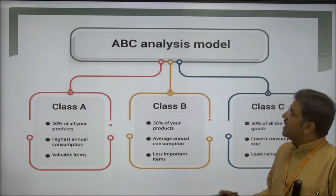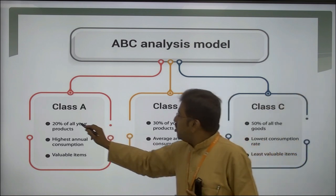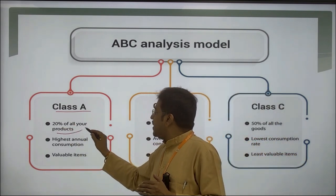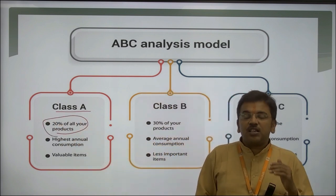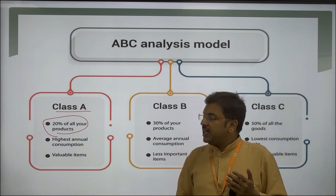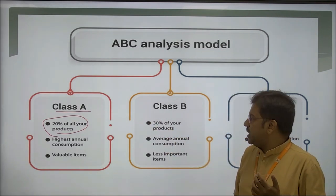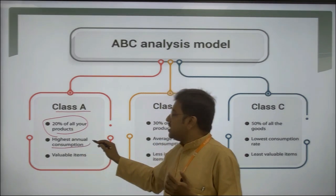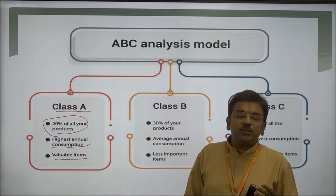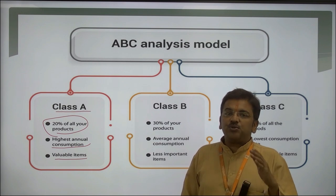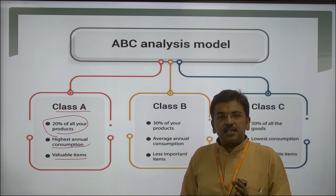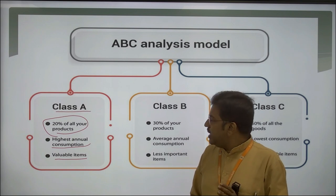Looking at the ABC analysis model: for Class A, 20% of all your products come here, meaning the cost of your product is high. If you are going to buy a product worth 1 lakh rupees, automatically 20% of the values will be considered here, with the highest annual consumption. A valuable item example is cement — the cost of cement is very high. It must be kept properly so that environmental impact, especially from water or moisture, is minimized. This increases storage cost.